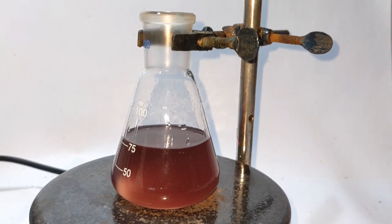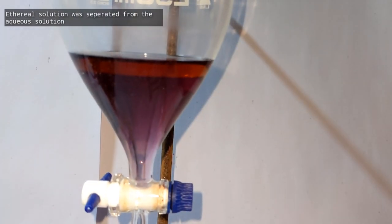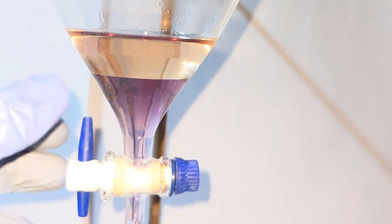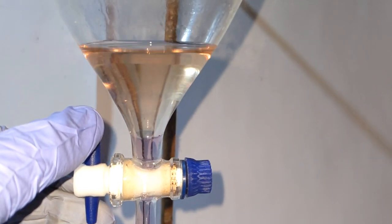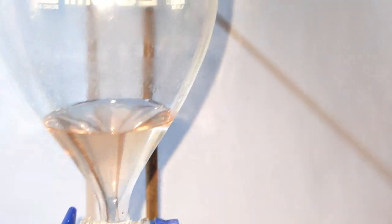The ether layer will be the top layer which we have to retain. Here you can see the second ether washing and the ether layer is much clearer than the previous ether wash.